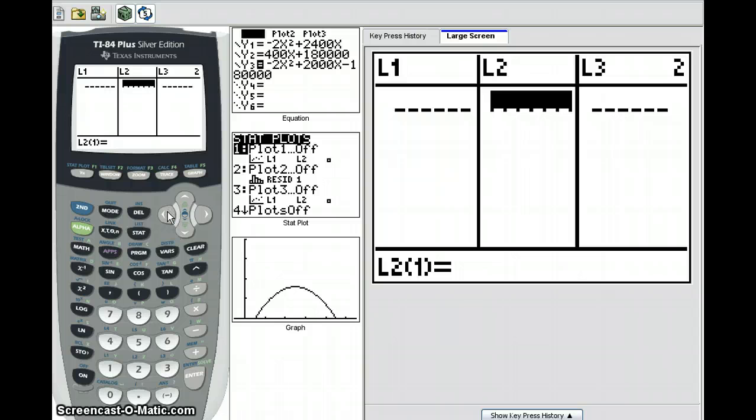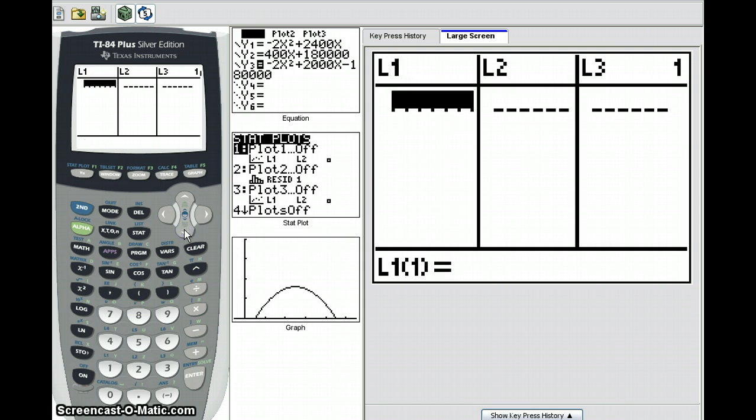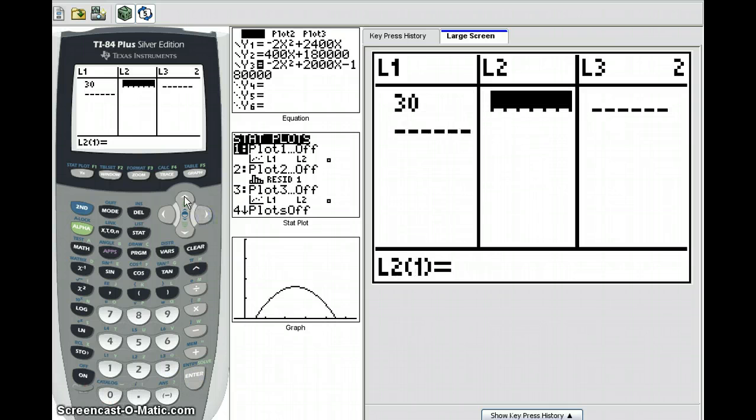Let's say our problem involves finding the relationship between speed and gas mileage. We're given some speeds and corresponding gas mileage figures. For instance, when we travel 30 miles an hour, the gas mileage is 22 miles per gallon. So we'll enter 30 into L1 and 22 into L2.